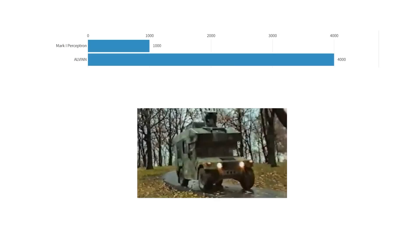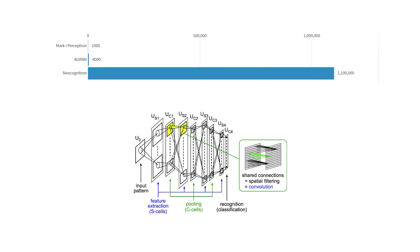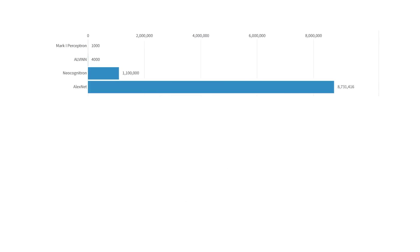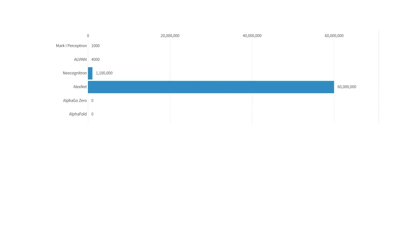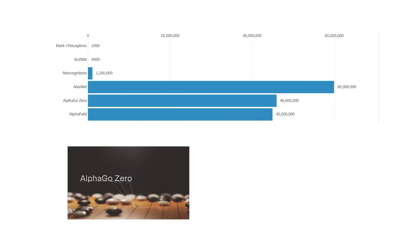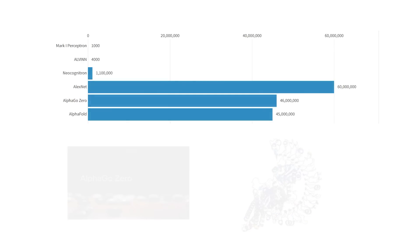Alvin, a self-driving car from 1989, had around 4,000 parameters. The Neocognitron from 1979, which was actually 10 years earlier, was the first ever convolutional neural network used to identify different handwritten Japanese characters, and had 1.1 million parameters. AlexNet, a convolutional neural network used to identify images from 2012, has around 60 million parameters. AlphaGo Zero, which was one of DeepMind's AIs that played the board game Go, and AlphaFold, which is DeepMind's AI for predicting protein structures, have 46 and 45 million parameters respectively.